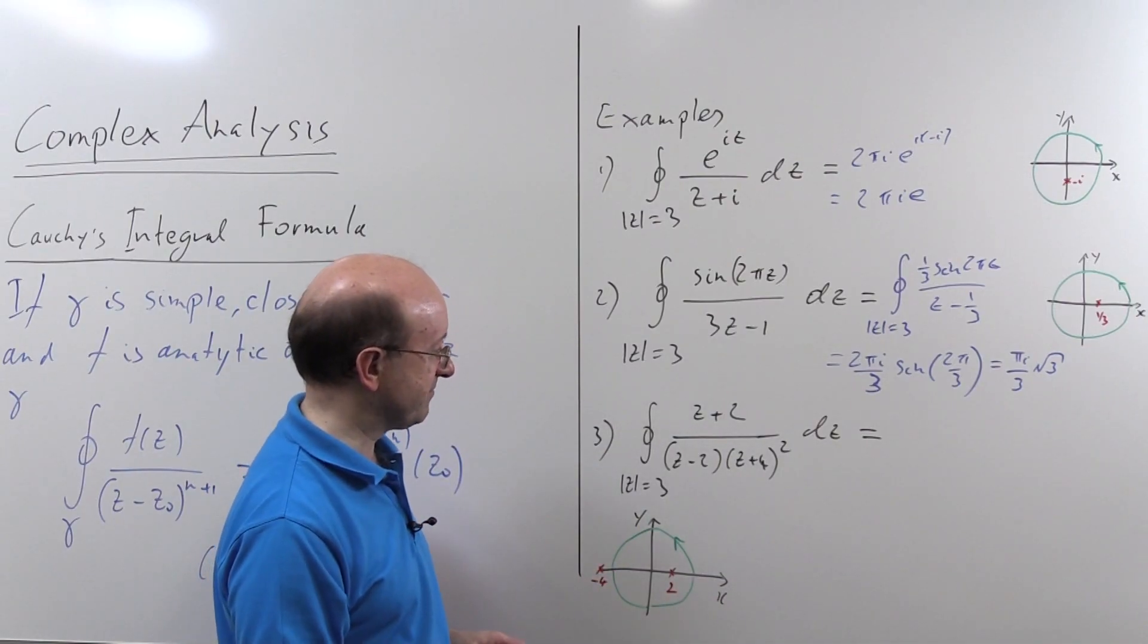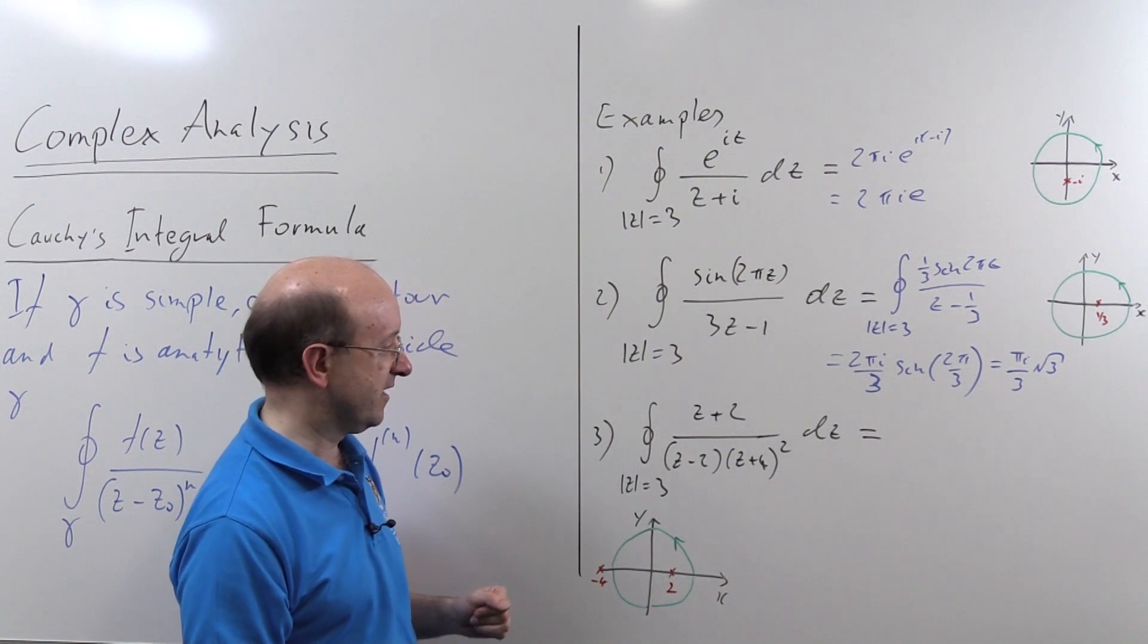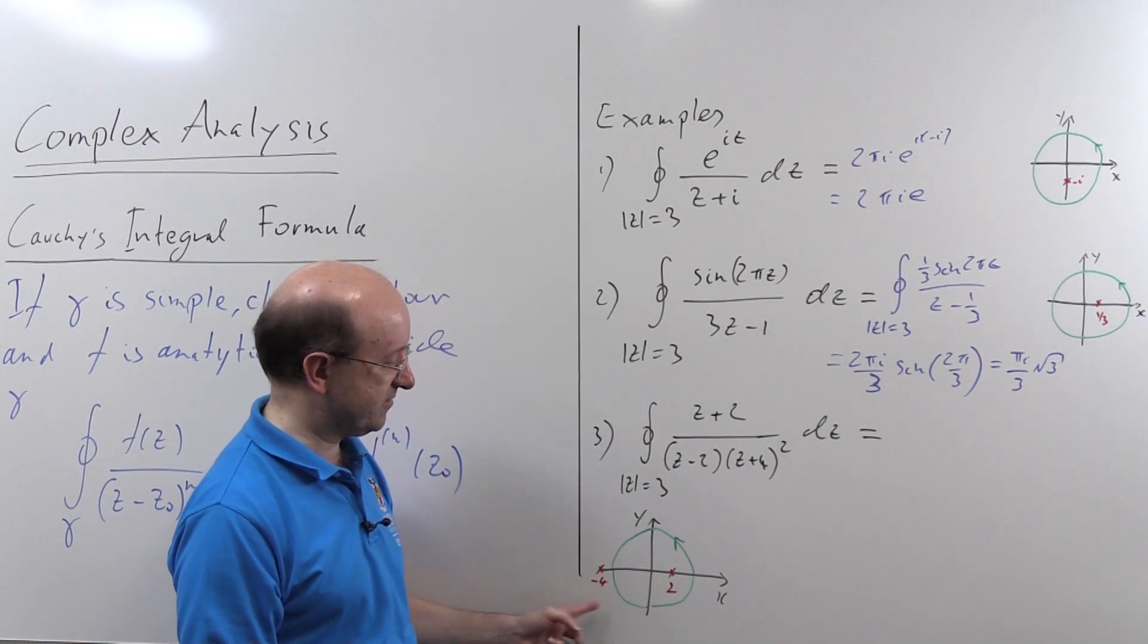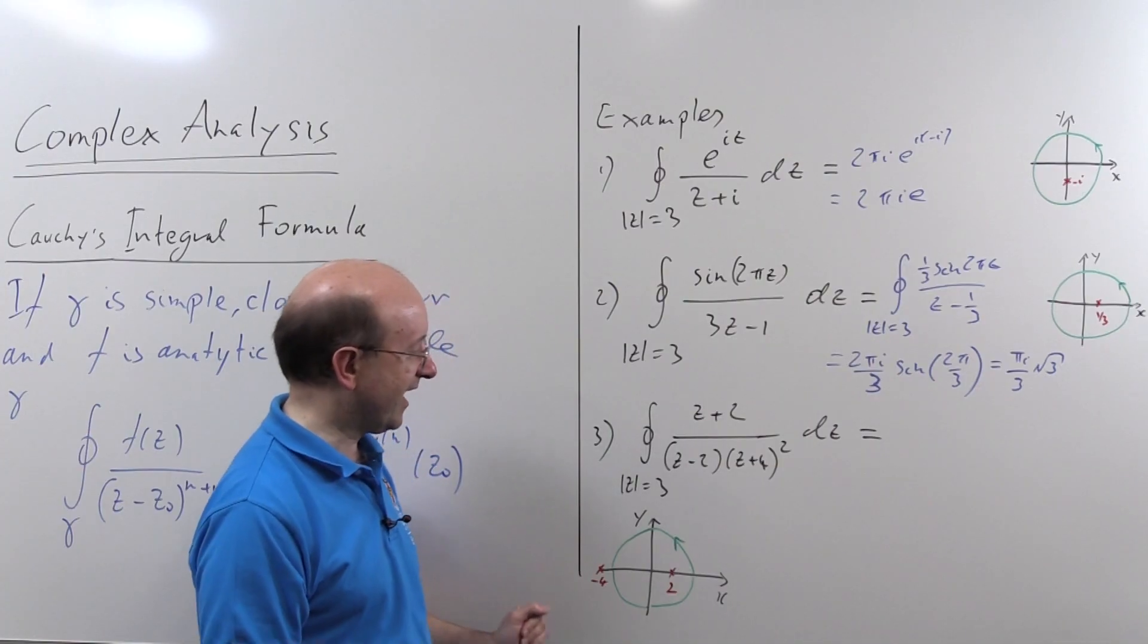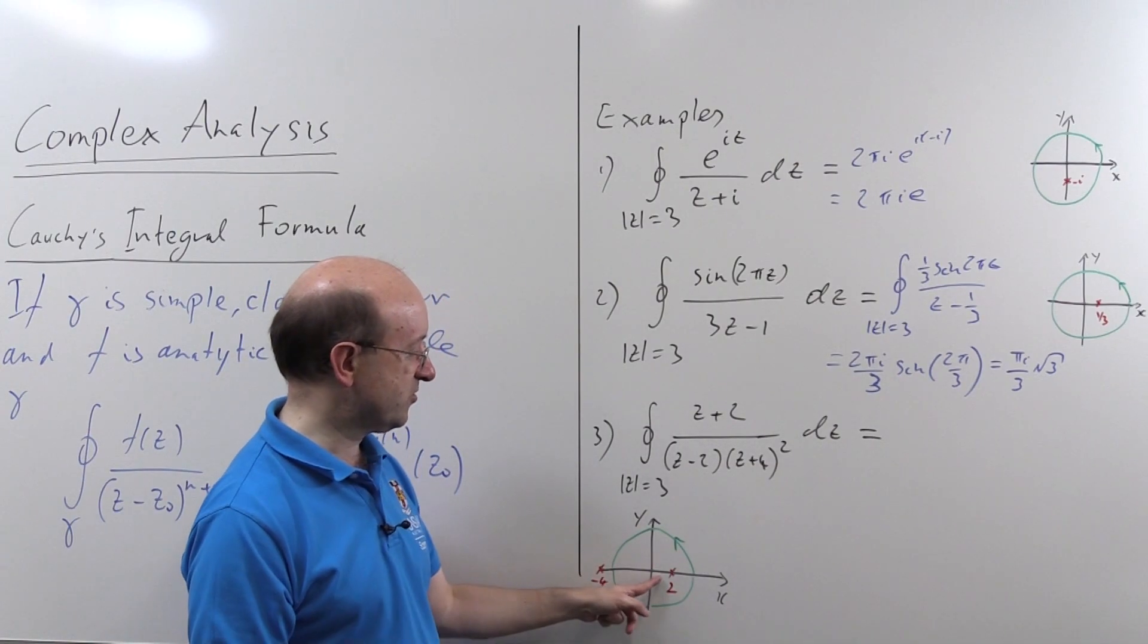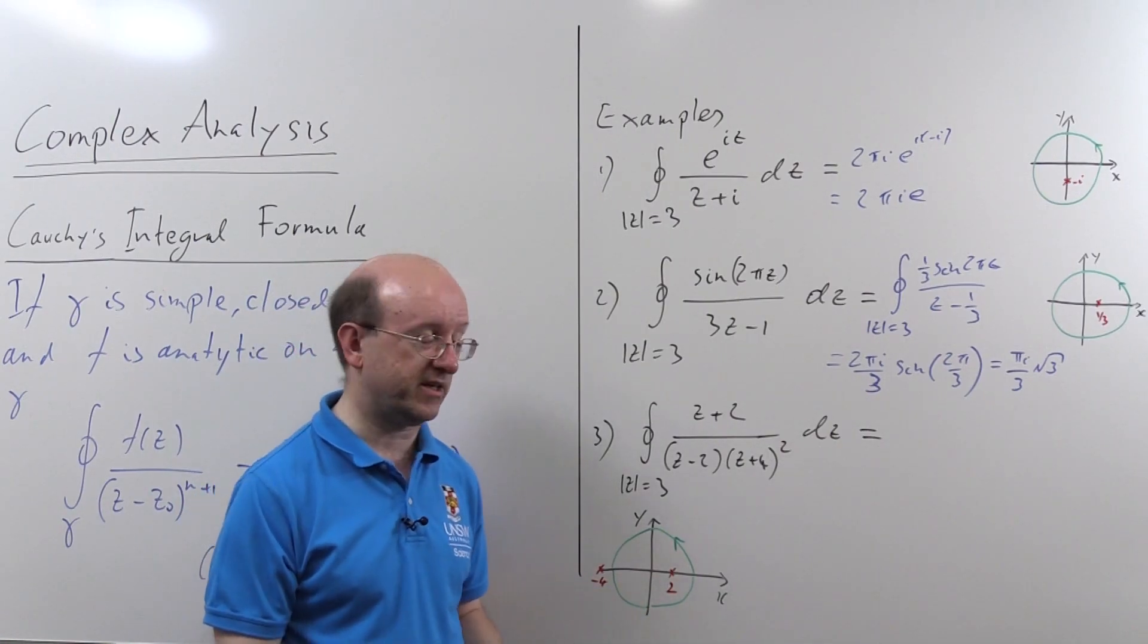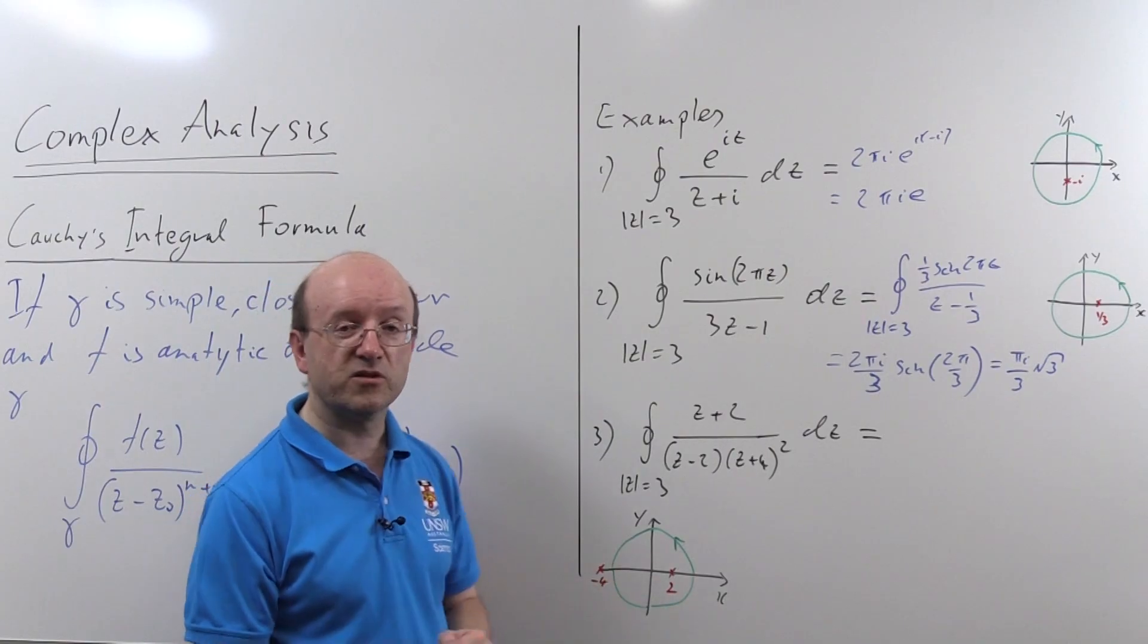In my third example here, z plus 2 over z minus 2 times z plus 4 all squared. This is my picture down here. I now have two singularities, two points where the denominator vanishes. Two, which is inside gamma, and minus 4, which is outside. And it's only 2 that matters.